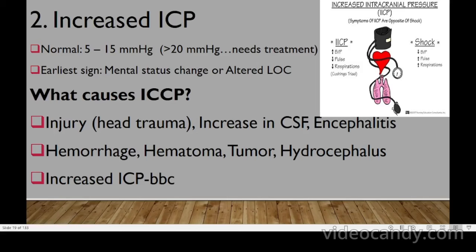Increased ICP (intracranial pressure) normally ranges between 5 to 15 mmHg; pressure greater than 20 requires treatment. The earliest sign of increased ICP is mental status change or altered level of consciousness. Causes include head injury or trauma, increased CSF production, encephalitis, hemorrhage, hematoma, tumor, and hydrocephalus — all causing disturbance within the three components: blood, brain, and CSF.